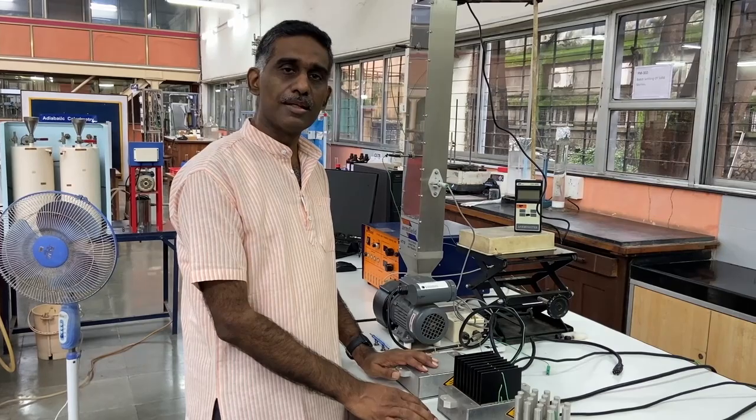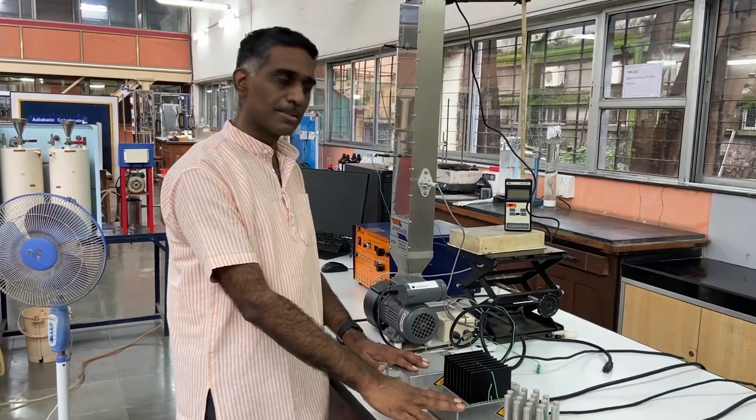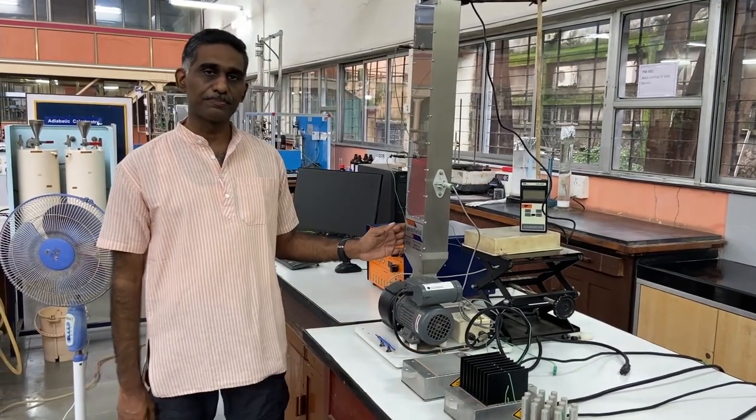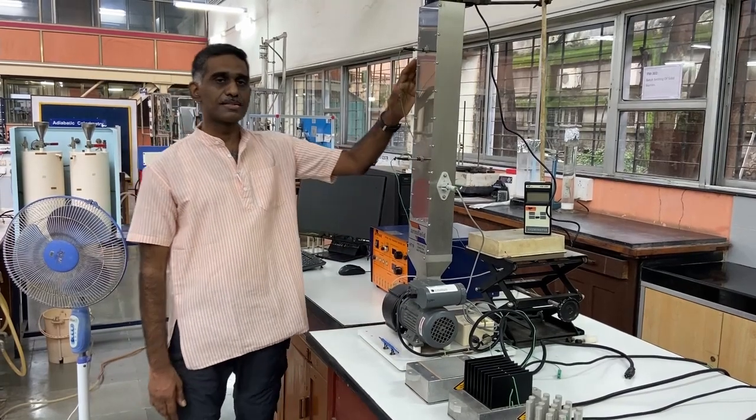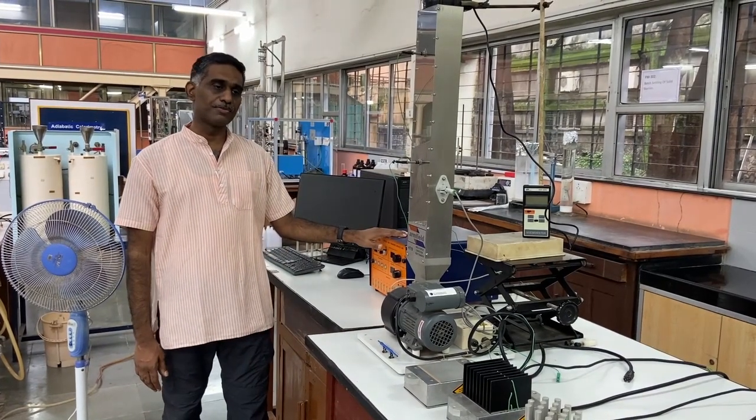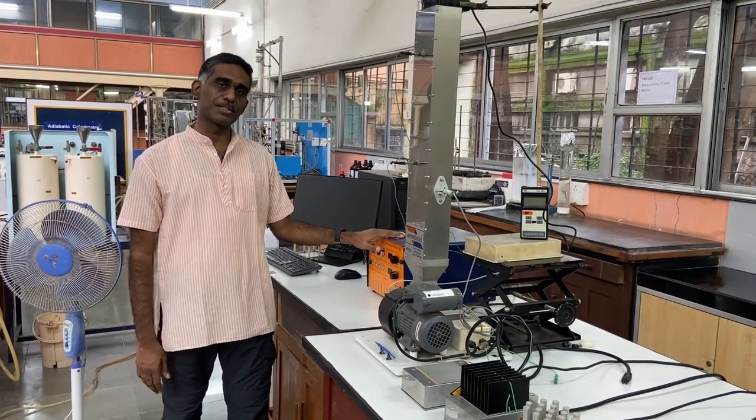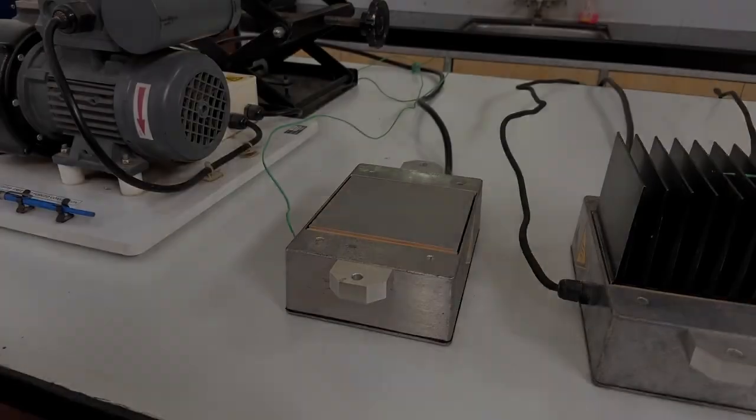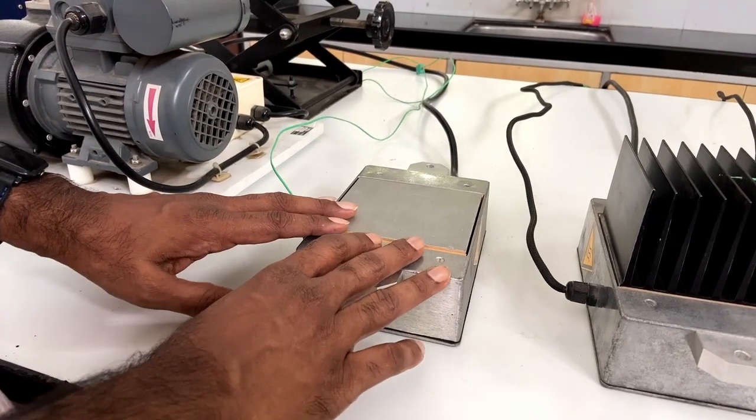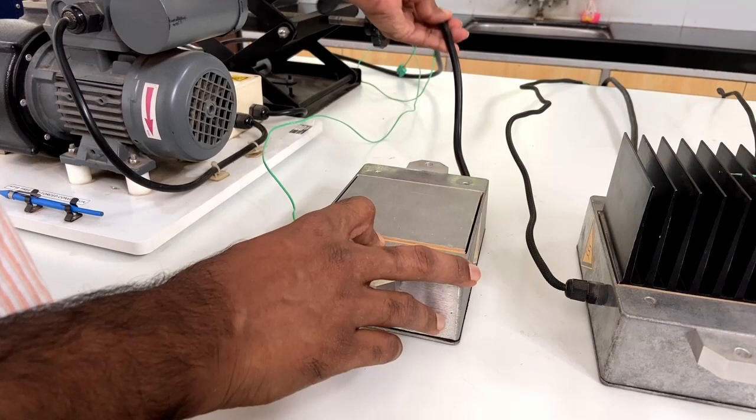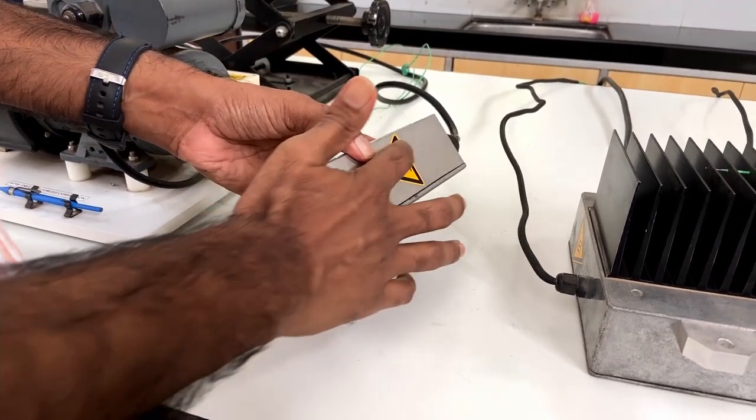Come let us see how all these things can be measured in this experimental setup. This is the entire assembly where we will be performing forced and free convection heat transfer experiment. This is a piece of equipment that can be heated through an electrical coil. The coil is inside this box.